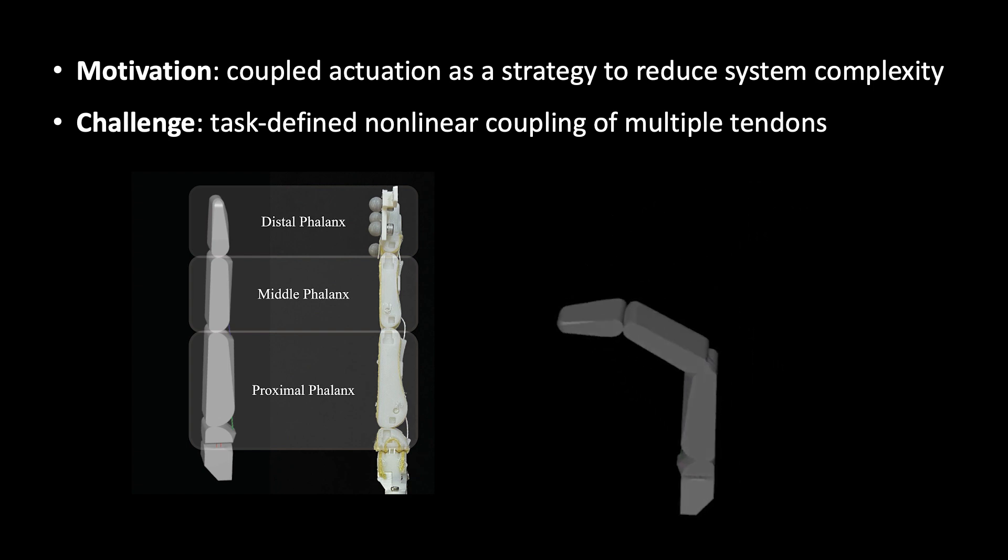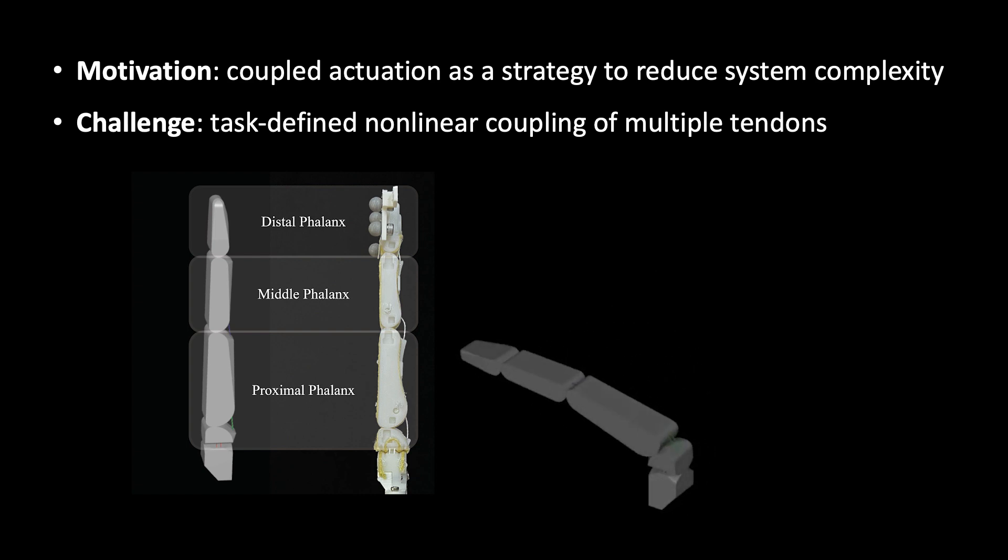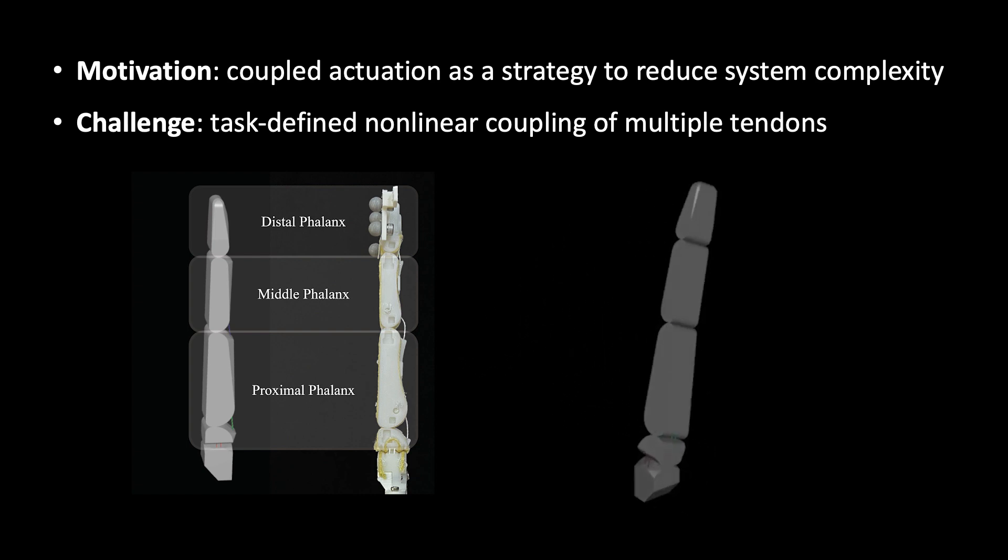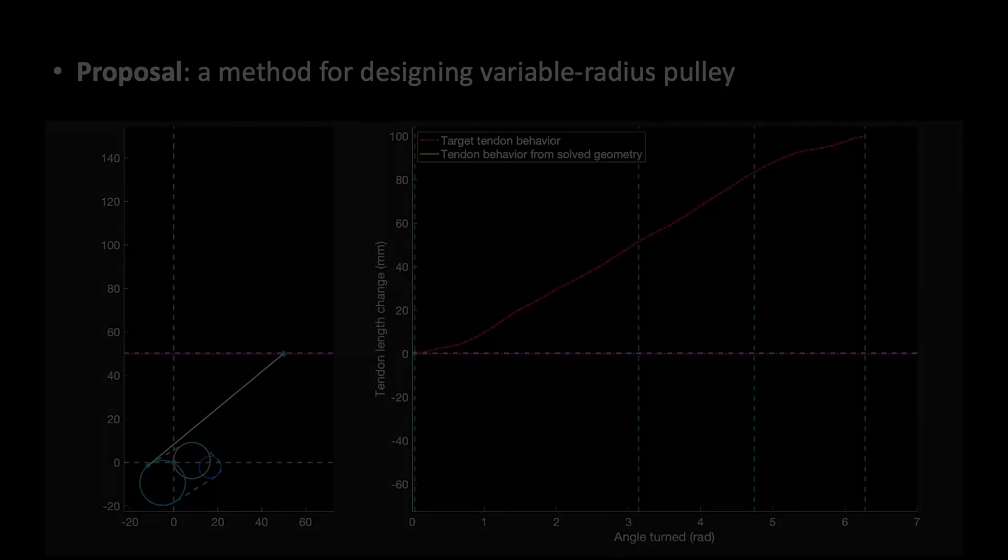Here we show a tendon-driven finger in simulation being actuated to showcase its task space. The finger is actuated by three pairs of tendons attached to three motors.